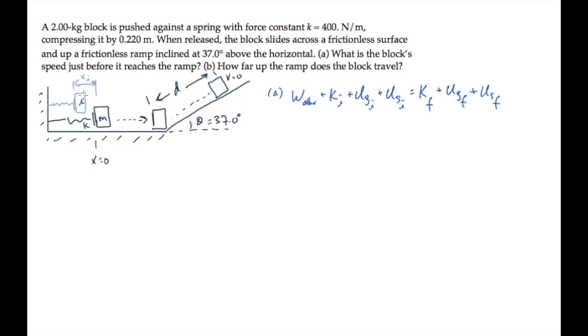If we label the initial point here just before the block gets released and the final point here just before it reaches the ramp, there's no work in between those two points. The block starts from rest so there's no initial kinetic energy. It begins and ends at the same height so the gravitational potential energies cancel.